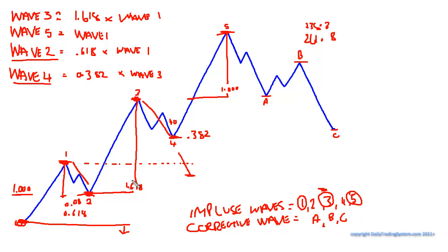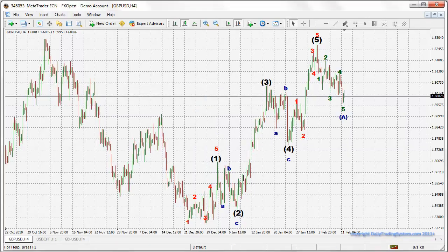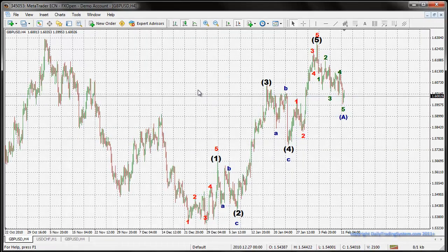Also remember that wave two will always retrace at least up to around 61.8%. If it only retraces down to 38.2%, then it's not really classed as a wave two — it will most likely be classed as a wave three forming a wave four point. With that in mind, I'm going to take this screen draw pen off and go over to the forex chart to show you what it basically looks like.